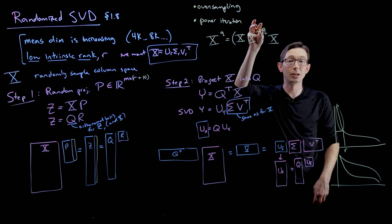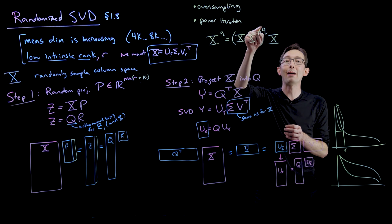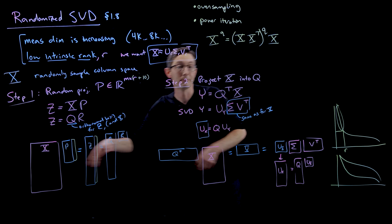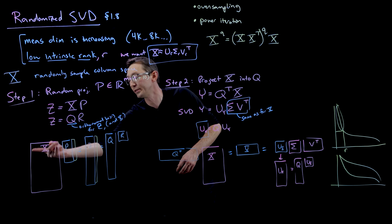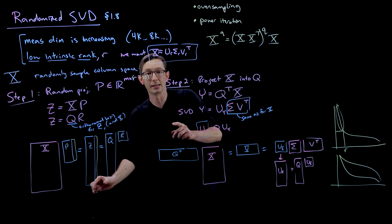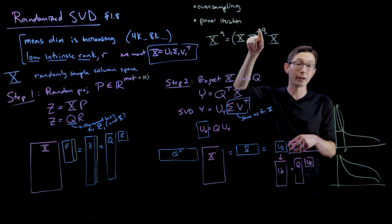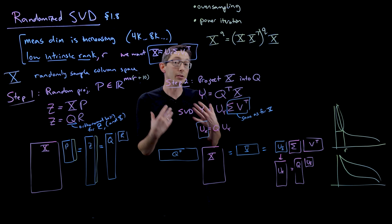This is absolutely more expensive. It requires more passes through this really big data matrix, and that's often the expensive part. I have to go through this whole data matrix at least once to compute this sketch Z. If I use q power iterations, I have to go through q more passes of my data matrix X, so it can be a lot more expensive.